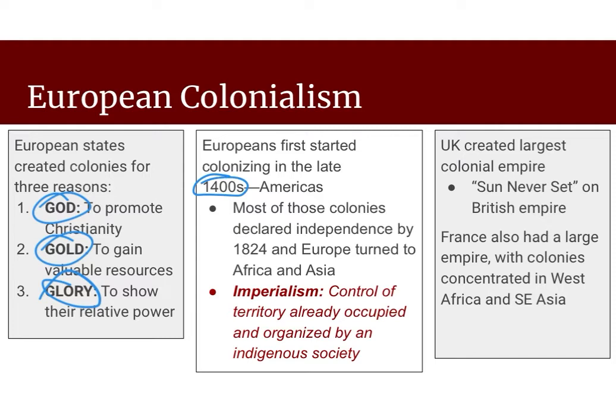Most of those colonies in North and South America had declared independence by 1824. And so at that point, Europe turned their attention and their sights on colonizing Africa and Asian countries or territories. Now that brings us to this idea of imperialism.